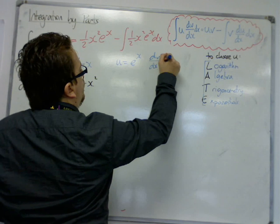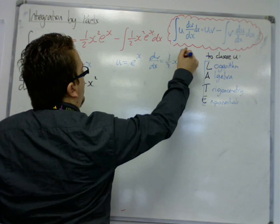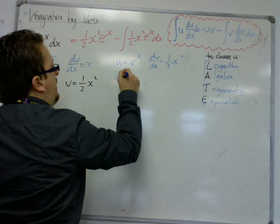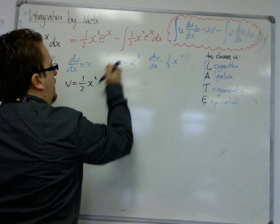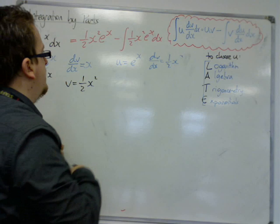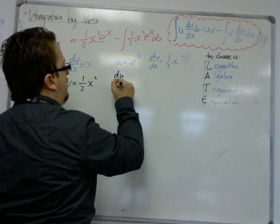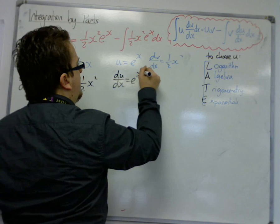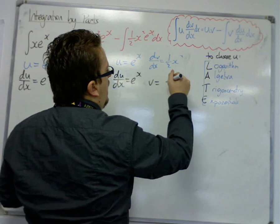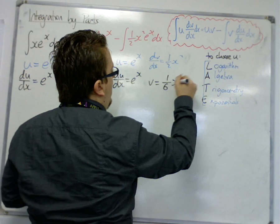dv by dx would then be one half x squared. du by dx, let's make sure I'm using the same pens here. du by dx would be e to the x. v would be one sixth x cubed.